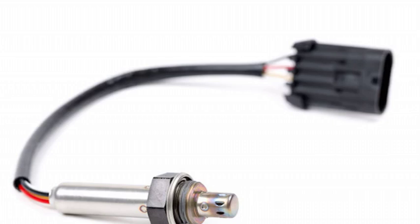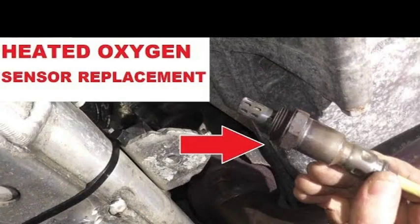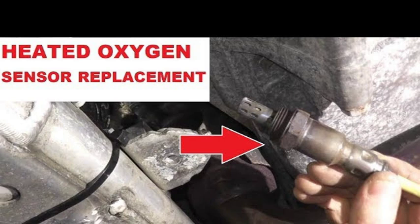Before we wrap things up, a few additional points regarding the P2270 code. Firstly, remember that this code specifically refers to bank 1, sensor 2 — your engine might have multiple oxygen sensors, so make sure you identify the correct one before replacing it. Secondly, while replacing the sensor is often the fix, it's crucial to address the root cause. Factors like faulty spark plugs, vacuum leaks, or even a failing fuel pump can contribute to skewed oxygen sensor readings. There's a wealth of information available online — automotive forums, repair manuals, and YouTube tutorials can provide detailed explanations. Understanding how oxygen sensors work can empower you to maintain your vehicle's optimal performance and fuel efficiency.